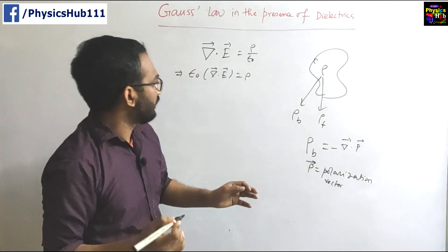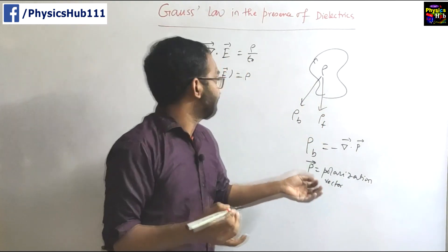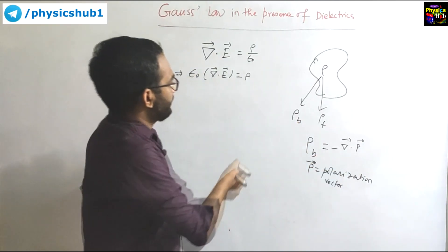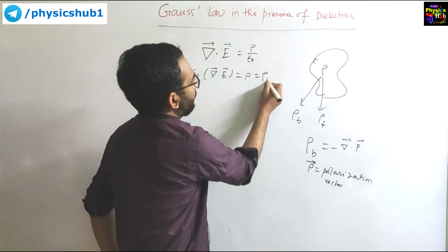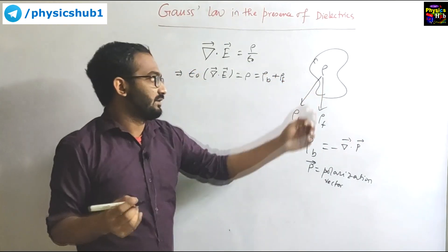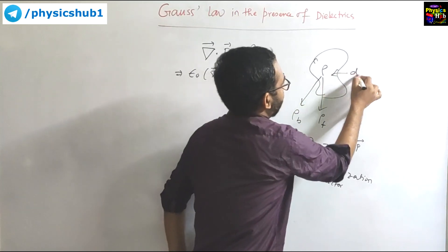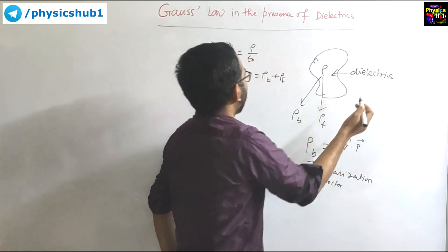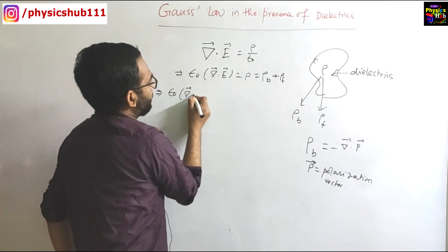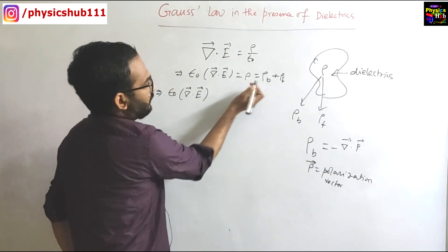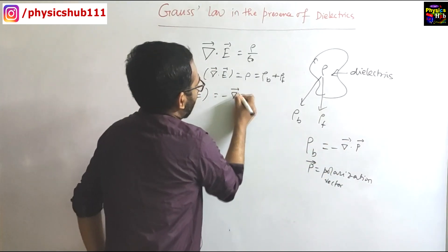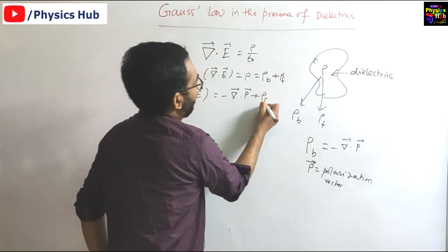Now let us try to replace this rho by this combination of rho_b and rho_f. So in the presence of a dielectric, rho can be written as the sum of rho_b plus rho_f because two types of charges are there in dielectrics. So our equation becomes epsilon naught times divergence of E, and rho_b can be written as minus divergence of P, plus rho_free.